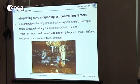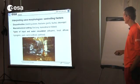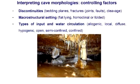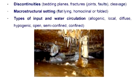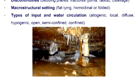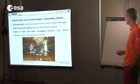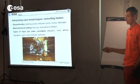We're talking about geological stuff, so discontinuities like bedding planes, fractures, joints. Most caves form along open paths in the rock that were there before and were enlarged. The macro structural setting — whether the bedding is flat-lying, horizontal, completely vertical, or folded — and the type of water coming in, which can be allogenic coming from outside the Karst area, local, diffuse, or hypogenic.